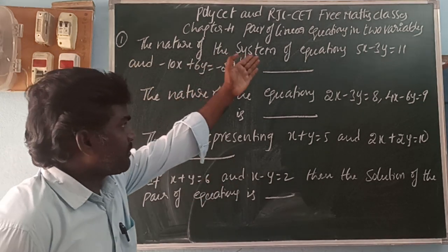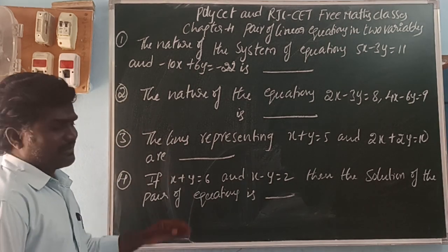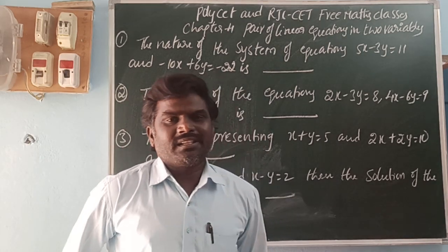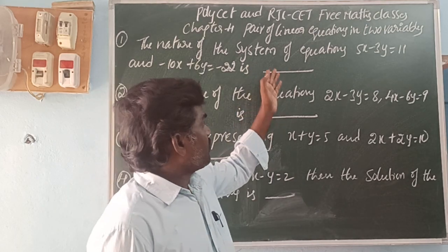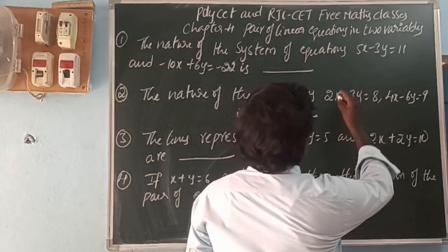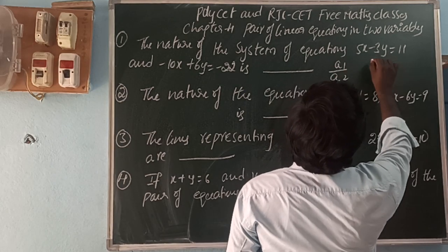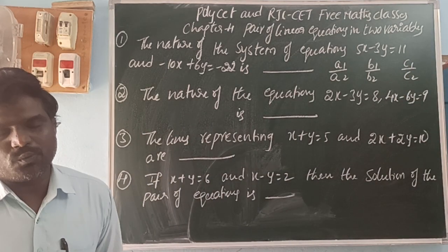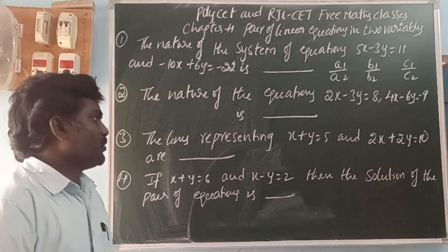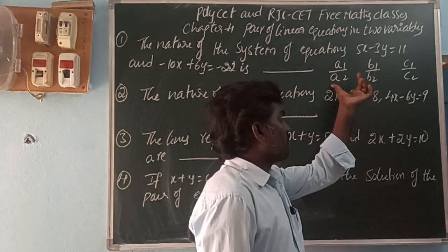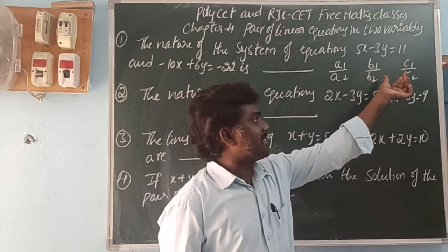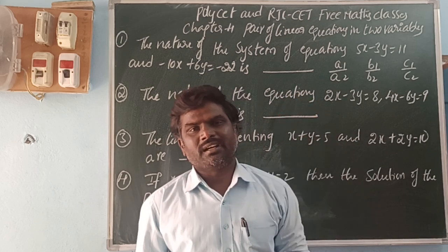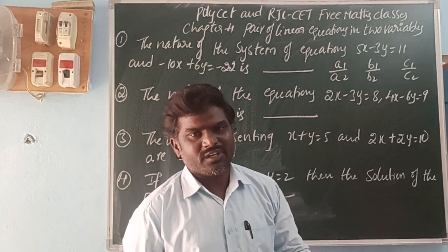First, the nature of the system of equations: 5x minus 3y is equal to 11 and minus 10x plus 6y is equal to minus 22. How we can find the nature? We know the relation between solutions and quotients. Here, A1 by A2, B1 by B2 — the x quotient ratio, y quotient ratio, constant ratio. If these three ratios are not equal, the solutions are a unique solution. If the x quotient and y quotient ratios are equal but not the constant, those are parallel lines — no solution. If all three ratios are equal, the lines are coincident lines with infinitely many solutions.